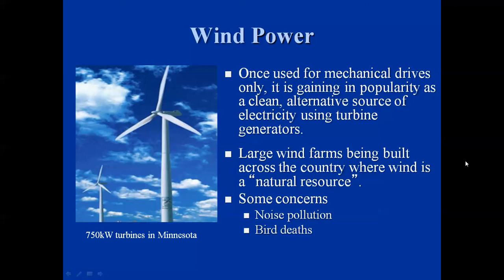Wind power was once used for mechanical drives only. It's gaining in popularity as a clean alternative source of electricity using turbine generators. The old windmills were used on farms to draw water up from aquifers to serve as wells, and way back they were used to grind flour and corn. Today we have large wind farms being built across the country. Some concerns include noise pollution for nearby residents and numerous reported deaths to flocks of birds flying in those areas. The picture on the left shows 750-kilowatt turbines in Minnesota on a large wind farm.